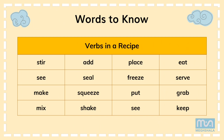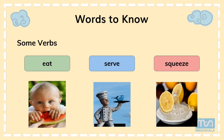Now let us learn a few more verbs and their actions. The verb 'eat' — a picture showing the action of eating is given. The verb 'serve' — an action picture is given. And the verb 'squeeze' — a picture of squeezing is also shown. So these are the verbs with their associated actions.